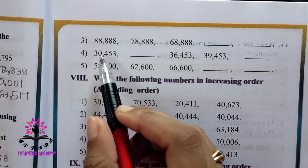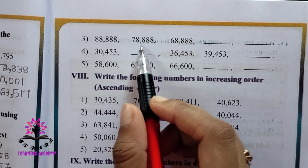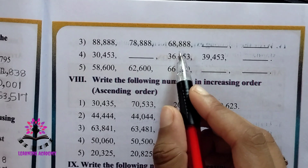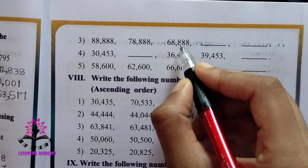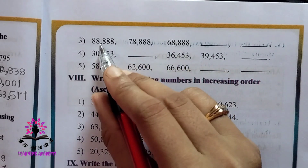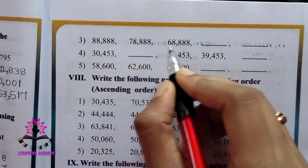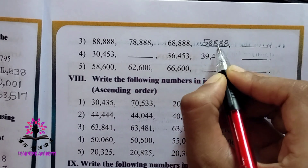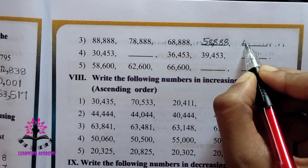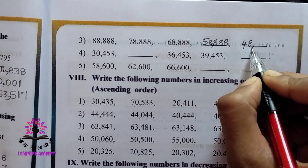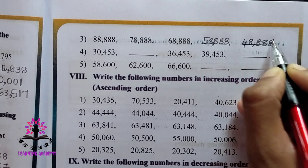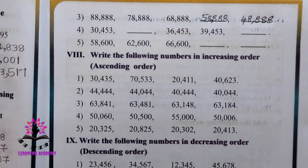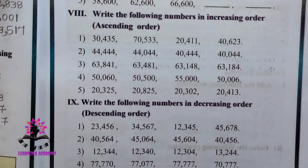The next series: 88,888 — 78,888 — 68,888 — so the next number will be 58,888, then 48,888. These two remaining series you can solve by yourself. Let us go to the next Roman number.